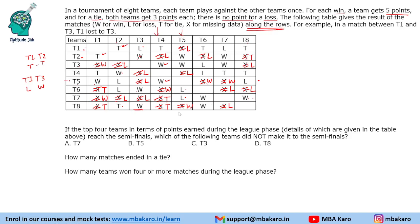Now we count wins, losses, and ties for each team and calculate points. Team 1 has no wins, 3 losses, and 4 tie matches — total 7 matches. Team 2 has 3 wins. Team 3 has 3 wins, 2 losses, and 2 tie matches. Team 4 has 4 wins, 1 loss, and 2 tie matches. Team 5 has 4 wins and 3 losses with no ties. We record W, L, T, and points for each.